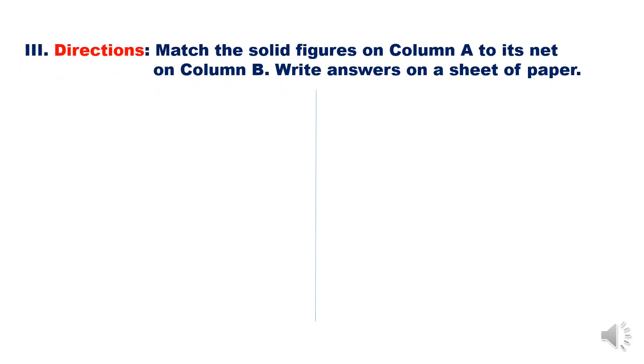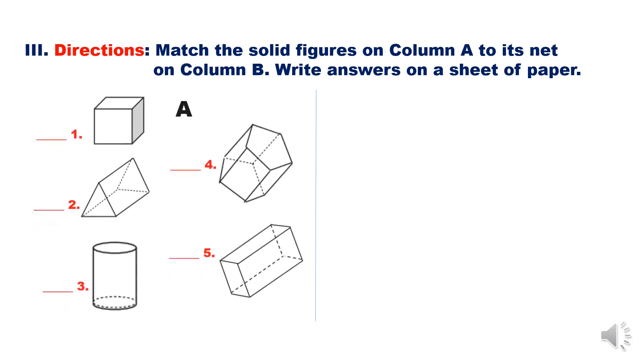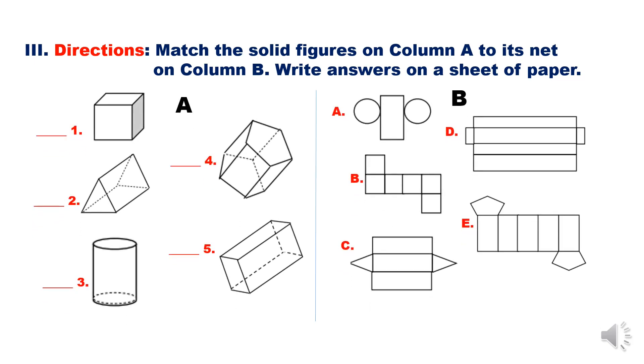Match the solid figures on column A to its net on column B. Write answers on a sheet of paper. Number 1 to 3. That is cube. Now the net is letter B. Number 1 - that is triangular prism and the answer is letter C. Then continue this activity and try to answer number 3, 4, and 5. And time starts now.